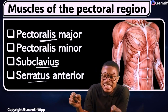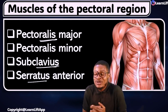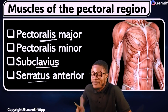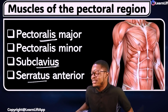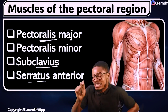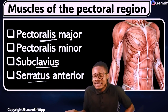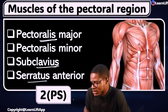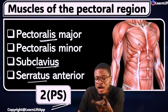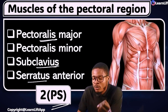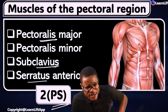Serratus anterior. Pectoralis major, pectoralis minor, subclavius, and serratus anterior. Now there's an acronym they form — your two P's. Two P's, two S's. P major is pectoralis major, P minor is pectoralis minor, then subclavius and serratus anterior.